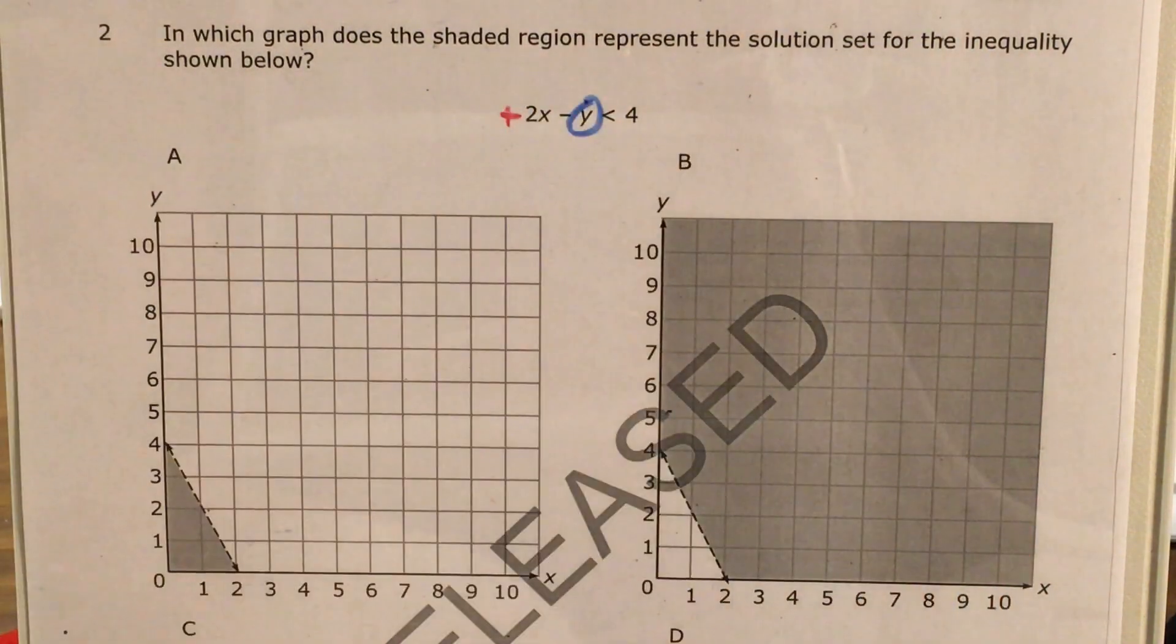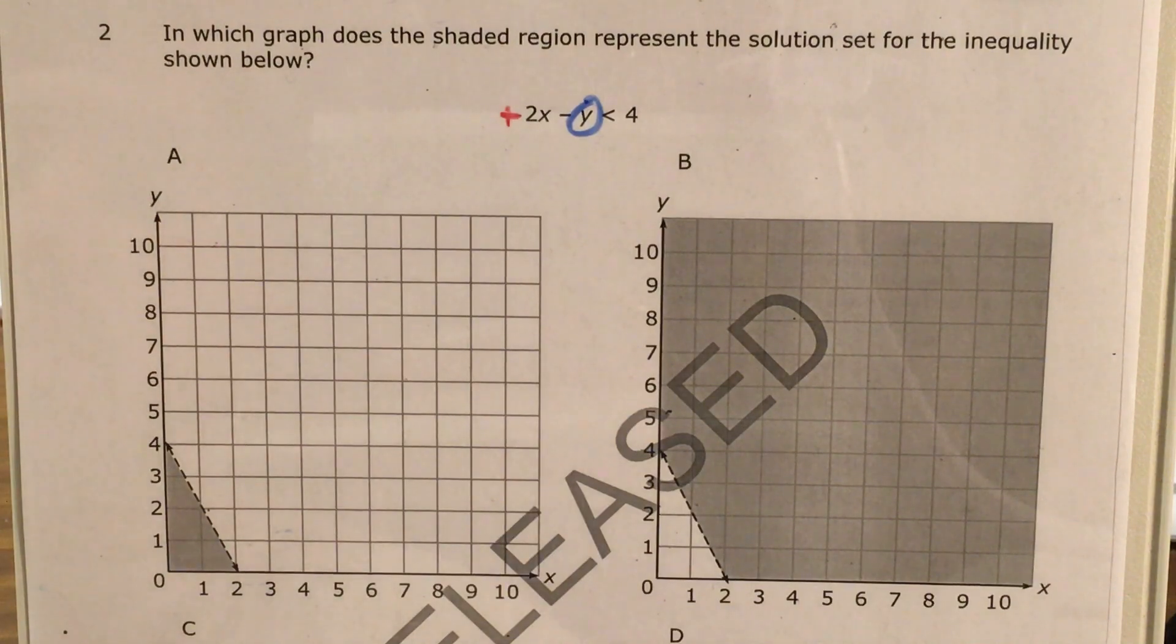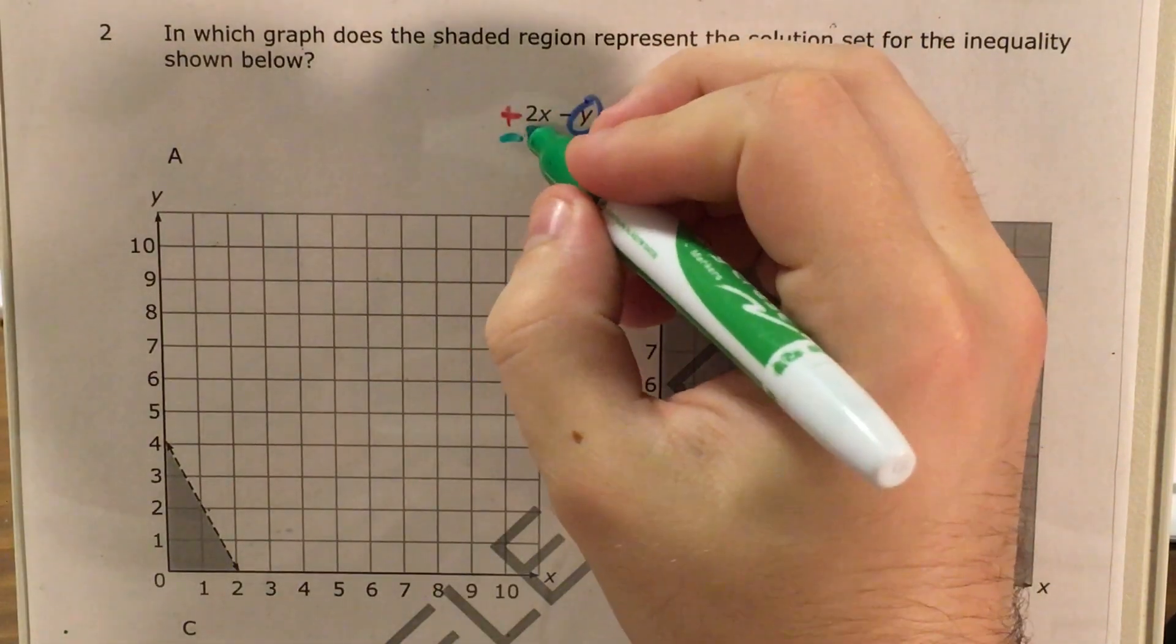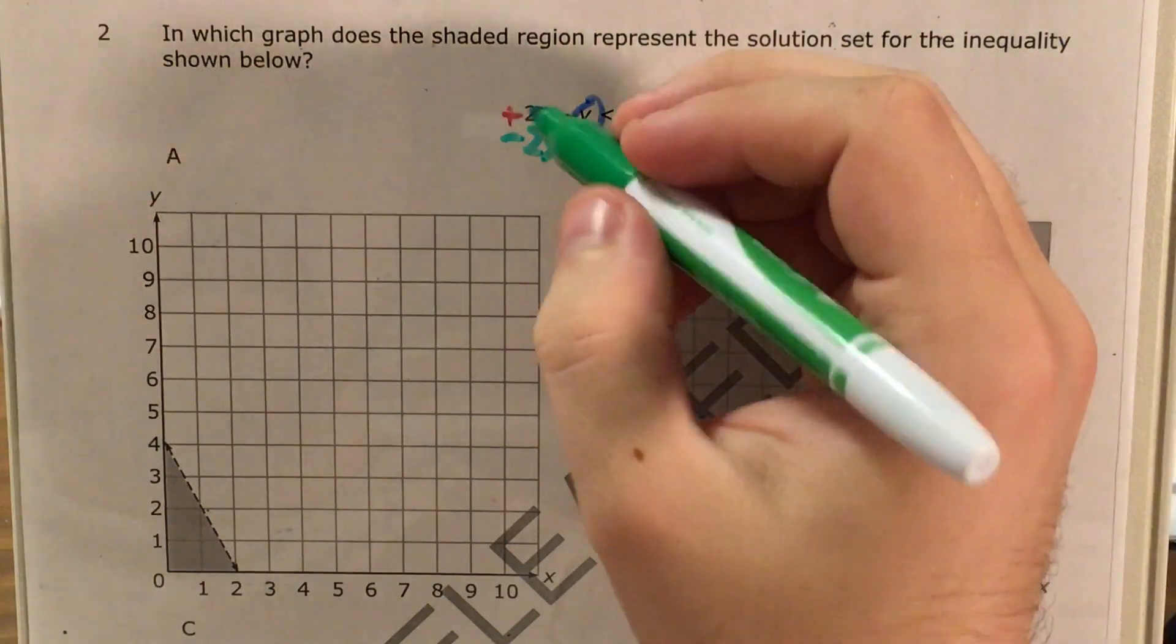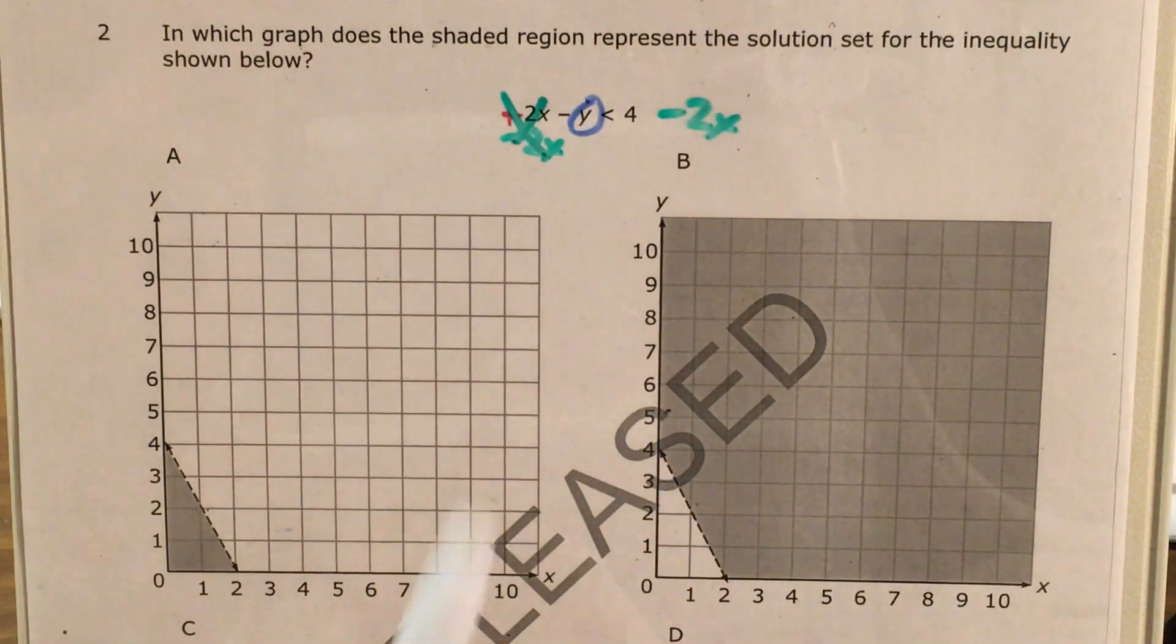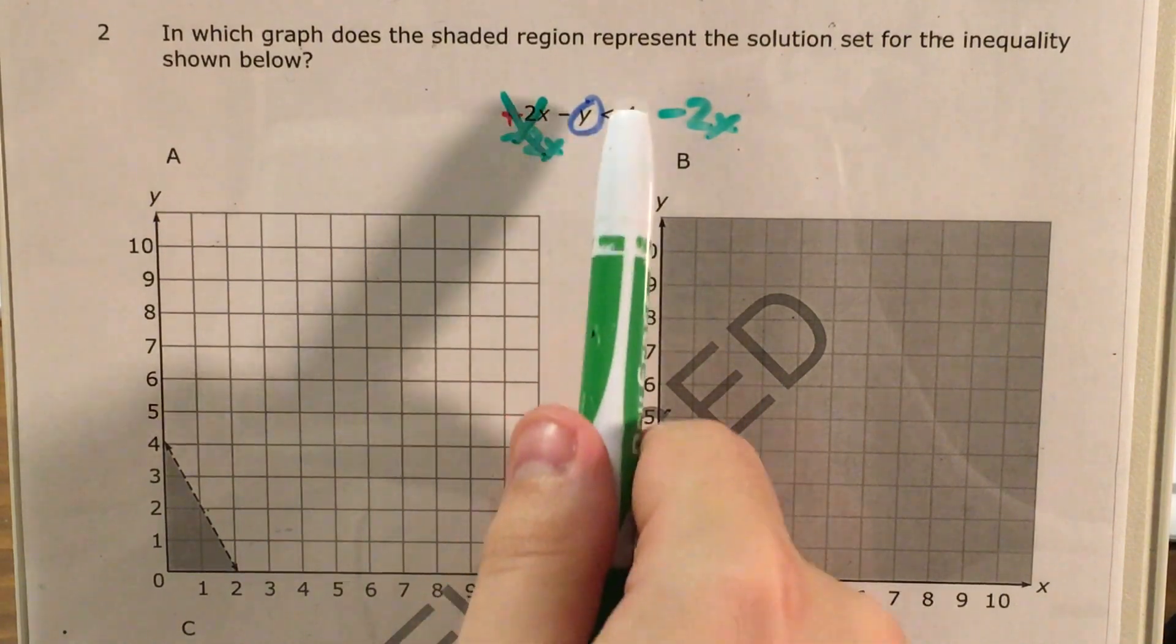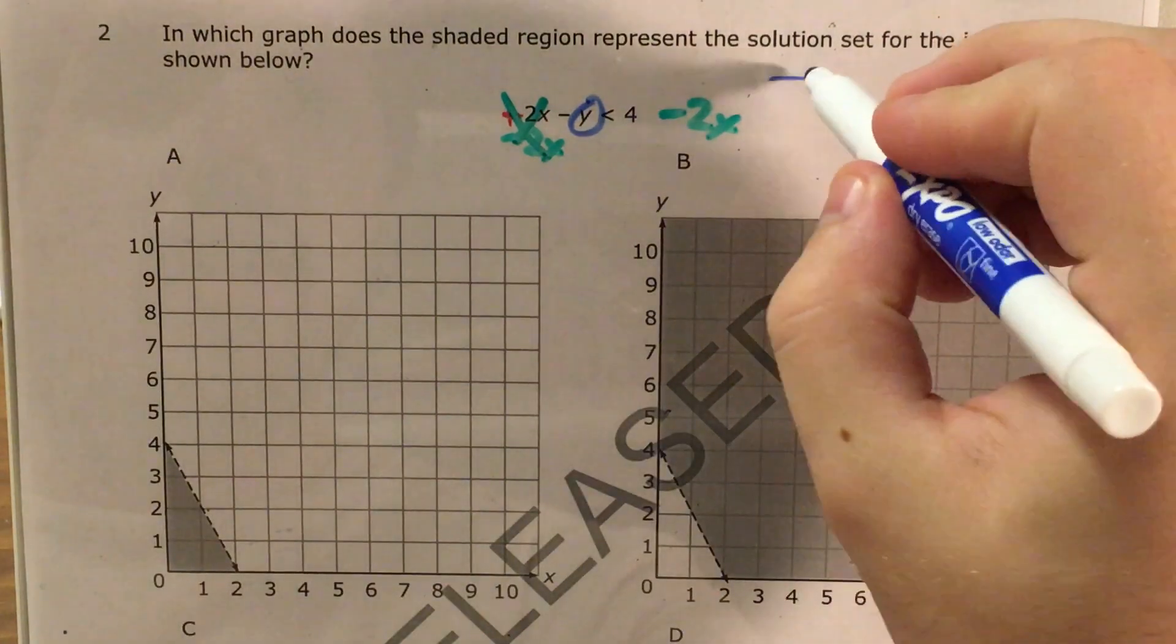So I'm going to start by saying that this is positive 2x. And I don't like that this is sharing a side of this inequality with y. So I want to get rid of it the same way I would if I were solving an equation. To get rid of positive 2x, I need to subtract 2x. So now positive 2x and negative 2x cancel. And I'm left with negative y is less than 4 minus 2x.